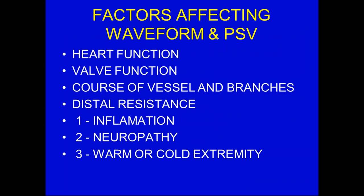There are factors that affect the waveform and peak systolic velocity that you should be aware of. When you're going to use information to interpret stenosis, you have to ask these questions or find out from the history. What's the heart function? If somebody's in CHF, they're not going to generate higher volumes throughout the whole body. There can be a valve abnormality, which will affect the blood pressure from the heart. The vessels can be tortuous. You want to know about branches and whether any could be occluded. You also need to know about distal resistance — if the patient has an inflammatory process, there's typically going to be a lot of flow, and that's going to show low impedance flow throughout and may not actually indicate a stenosis.